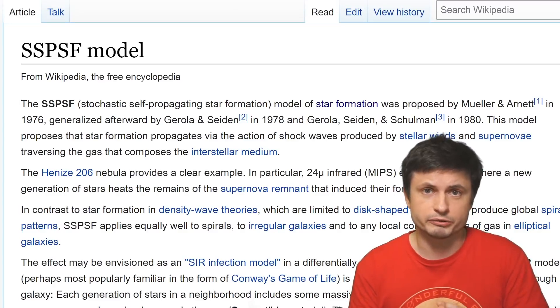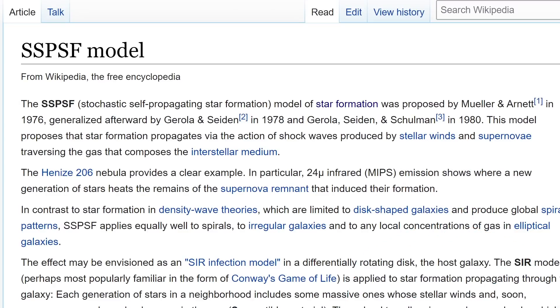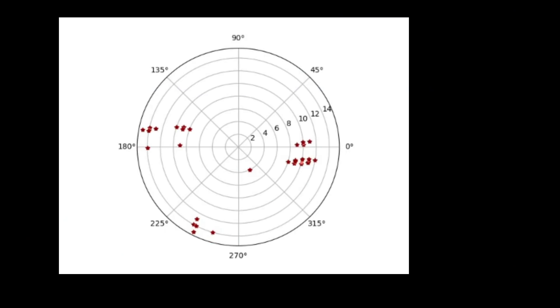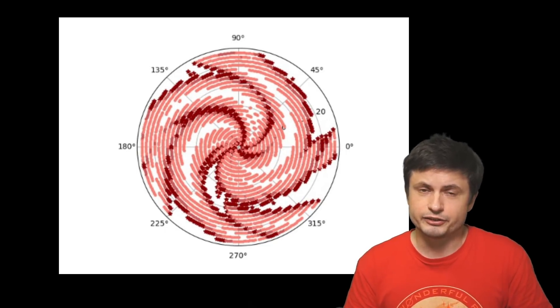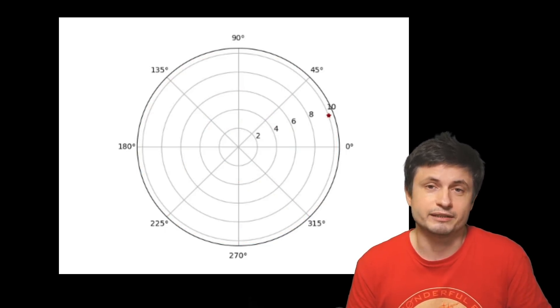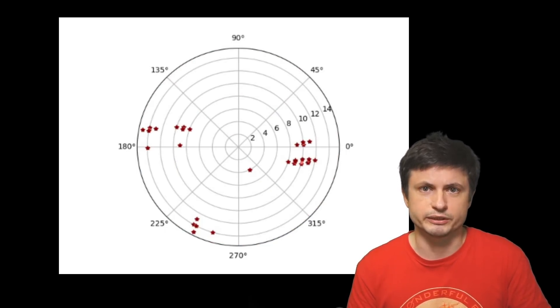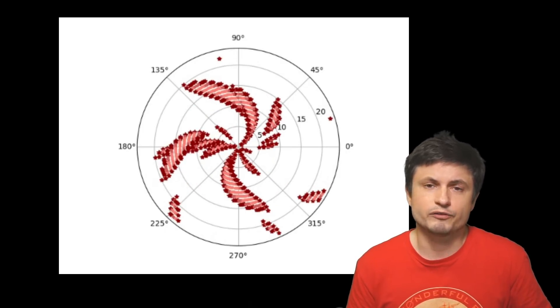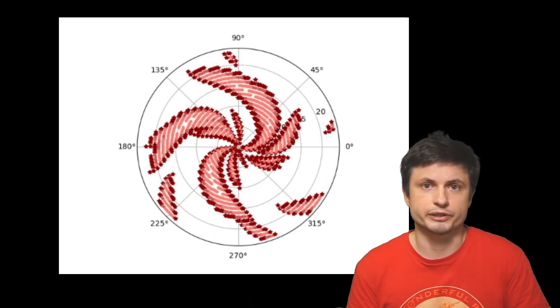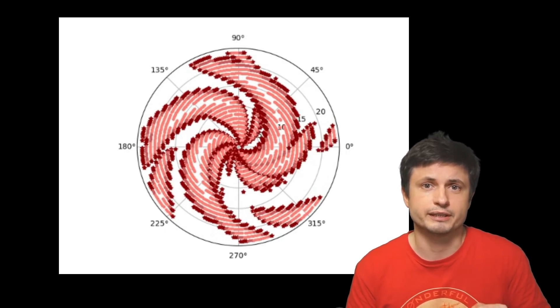There are at least some models, such as this one right here. The model known as the stochastic self-propagating star formation, that kind of tries to explain the formation of these structures. But the more realistic answer in this case is that it's still being debated, and it's still not entirely well understood. And so to answer how this is created, we're going to have to wait a few years until someone figures this out, and until someone proves this definitively.